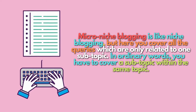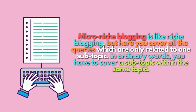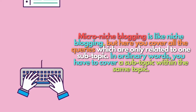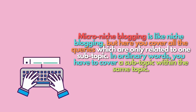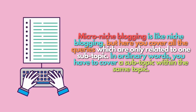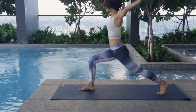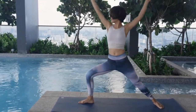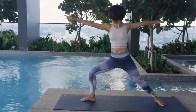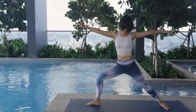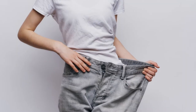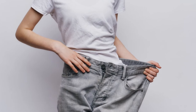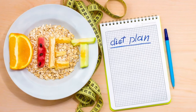Micro niche blogging is like niche blogging, but here you cover all queries related to only one subtopic. For example, in the health niche you can start a blog covering topics only related to bodyweight exercises to lose weight, or covering topics related to weight loss diet plans.